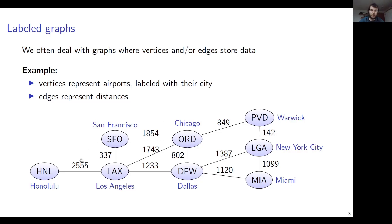For example, in this graph the vertices represent airports and we can label them with city names. The edges represent the distances between each of the airports. Of course, we can have a distance between some airports, and between some airports we might not be able to travel.